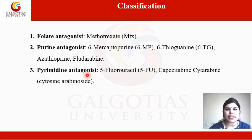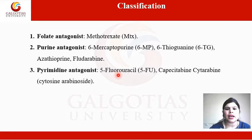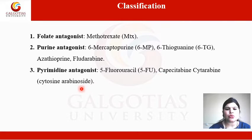The third category is pyrimidine antagonists. The drugs under this category are 5-fluorouracil, capecitabine, cytarabine — also known as cytosine arabinoside. These are the sugar derivatives of cytosine.